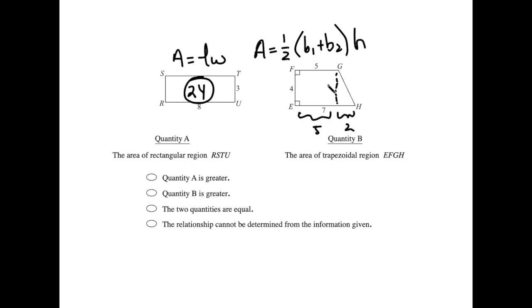And since this height is 4, then that height is 4. So 5 times 4 for this rectangle right here gives us 20.